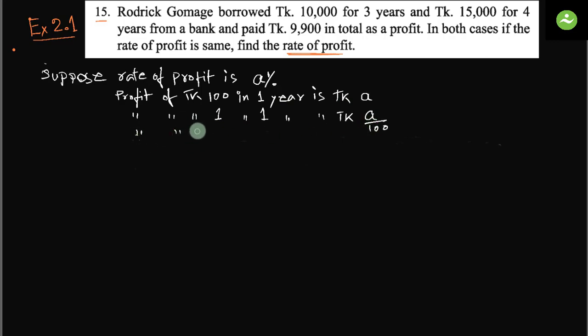Profit of taka 10,000 in three years, actually we can write three years, is taka a into... because from 1 to 10,000, amount of profit will increase. Again, one year to three years, amount will increase.